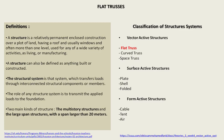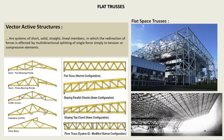For the classification of structural systems, we can divide them into three parts: vector active structures, surface active structures, and form active structures. My topic is the flat truss, which falls under vector active structures. Vector active structures are systems of short, solid, straight linear members in which redirection of forces is affected by multidirectional splitting of a single force into tension or compressive elements.